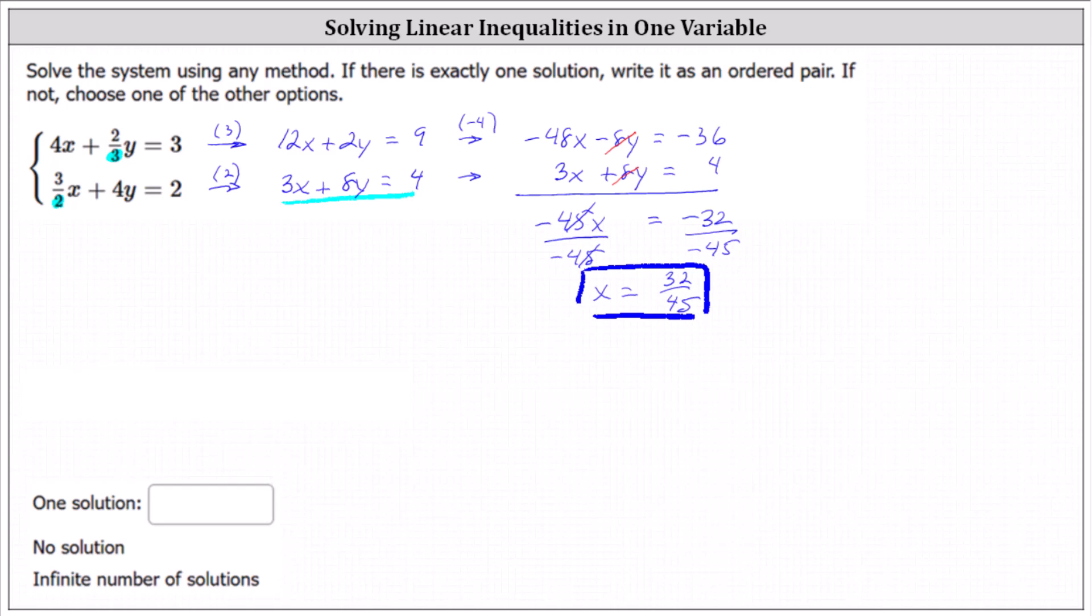And substitute 32/45 for x and solve for y. This gives us 3 times 32/45 plus 8y equals 4. To determine the product of 3 and 32/45, let's write 3 as a fraction with the denominator of 1.